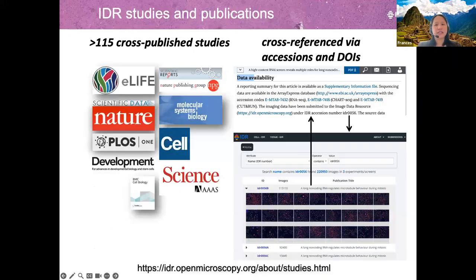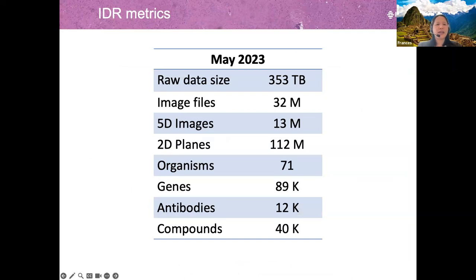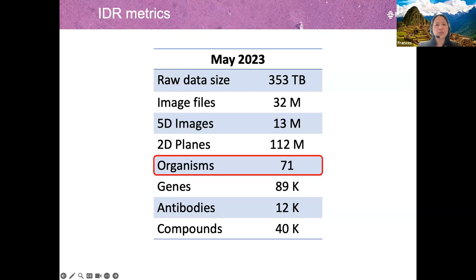IDR has over 115 studies cross-published in different journals and cross-referenced via accessions and DOIs. More specifically, this is 32 million image files, over 89,000 genes and 40,000 compounds, amounting to 353 terabytes of imaging data. Since the start of 2019, data volume growth has been about 75 terabytes per year. This audience may be particularly interested in the organisms we have in IDR — out of the 71 organisms currently in IDR, 52 of these are plants.